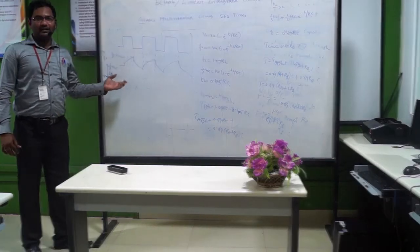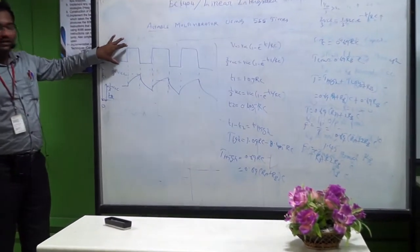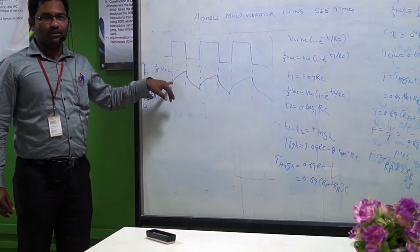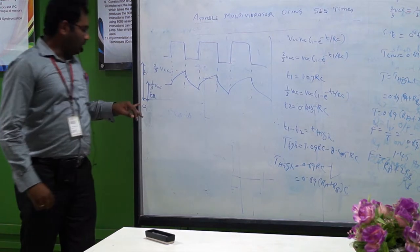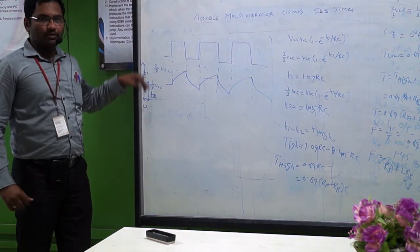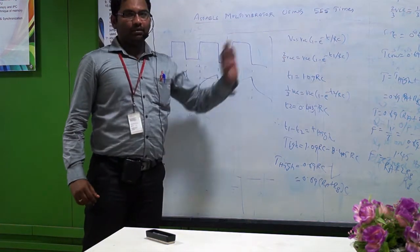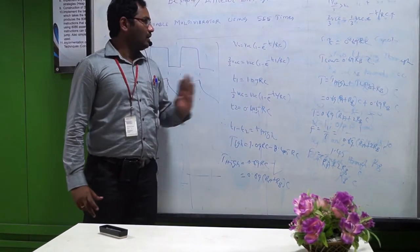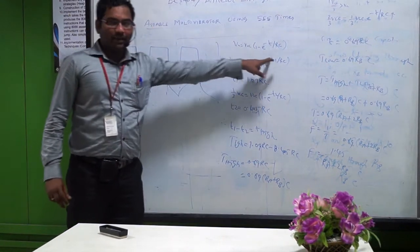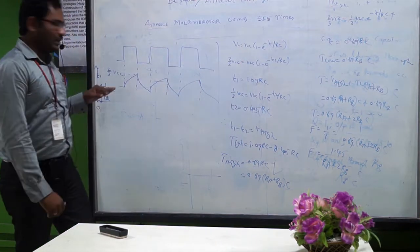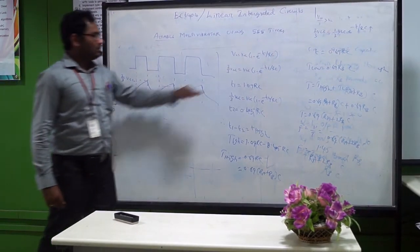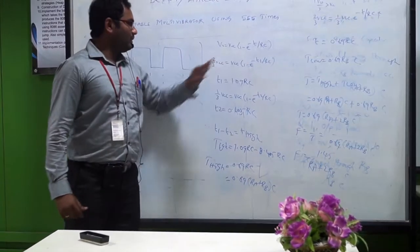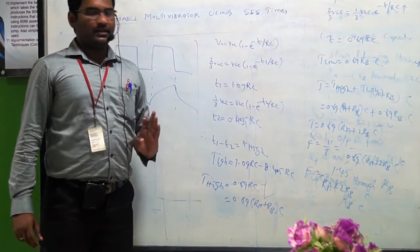Now let us see the timing sequence of the astable multivibrator. The trigger input is applied at pin number 2, and this is the output waveform. The voltage across the capacitor charges from 0 to 2/3 Vcc, and the time taken is T1. Initially, the voltage across the capacitor is Vc = Vcc × (1 − e^(−t/RC)). Time T1 is the time taken to charge from 0 to 2/3 Vcc, so: 2/3 Vcc = Vcc × (1 − e^(−T1/RC)). When simplified, we get T1 = 1.09 RC.